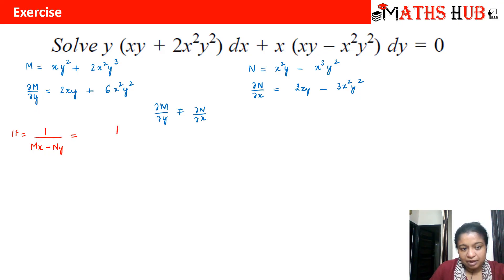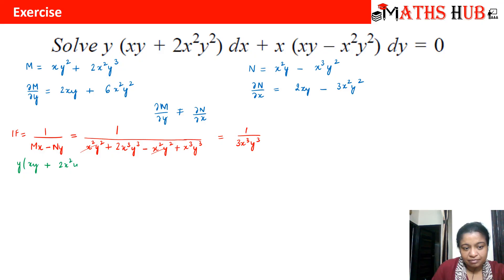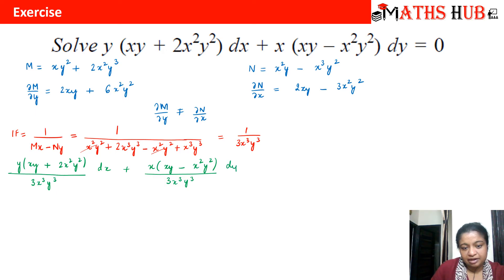Let's multiply M with x and N with y. We get x²y² + 2x³y³ minus (x²y² − x³y³). So x²y² cancels and we get 3x³y³ as the denominator. Multiplying the integrating factor 1/(3x³y³) with the non-exact equation: y(xy + 2x²y²) divided by 3x³y³ dx, plus x(xy − x²y²) divided by 3x³y³ dy = 0.